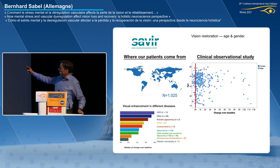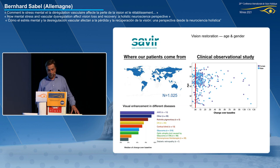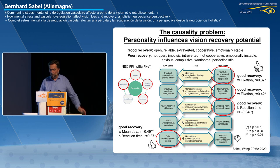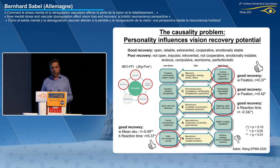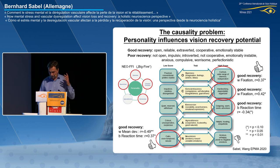Age and gender have no influence on recovery, but there is still quite variable response. Patients who recover best have a certain personality disposition: open-minded, reliable, extroverted, cooperative, and emotionally stable. Those who recover less are impulsive, introverted, not cooperative, and have emotional issues — anxious, compulsive, worrisome. Through psychotherapy, we help some of them change their state of mind. It is possible within two hours to achieve that with the right information, and then they also have a chance to improve recovery.